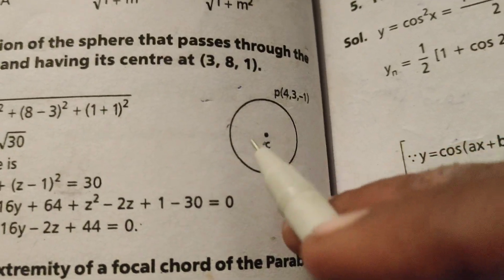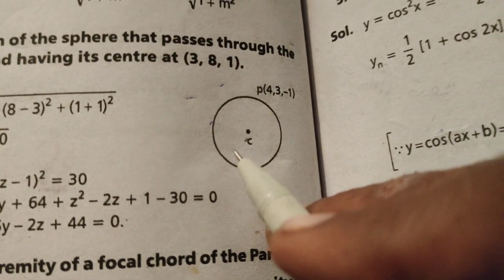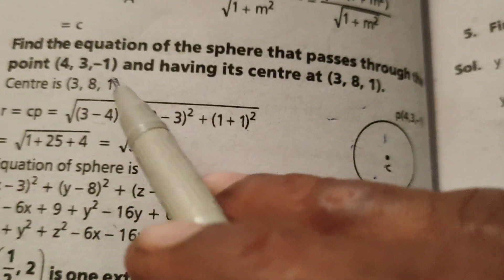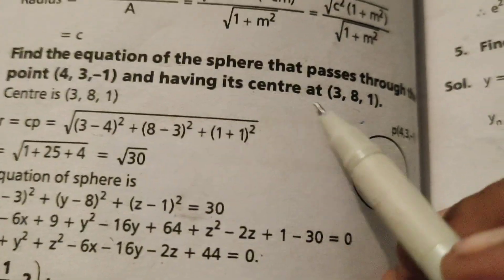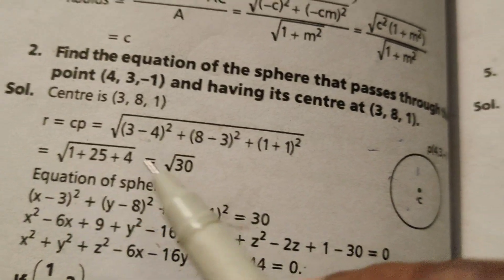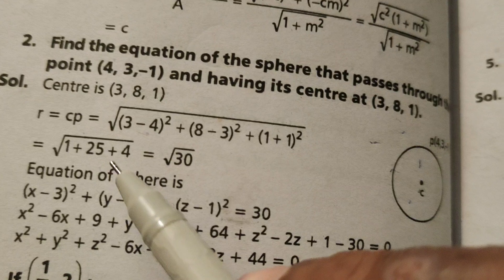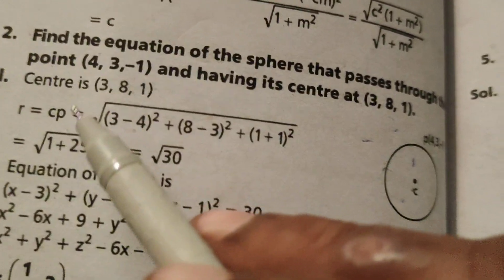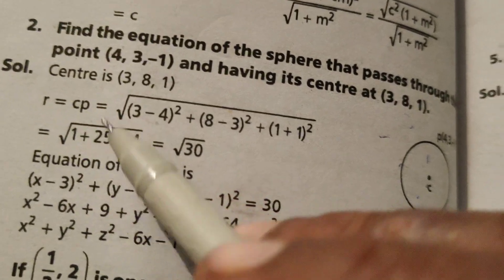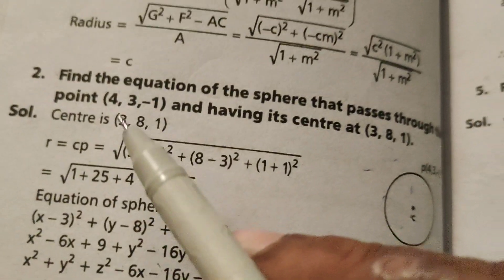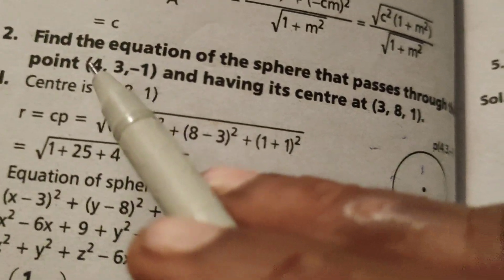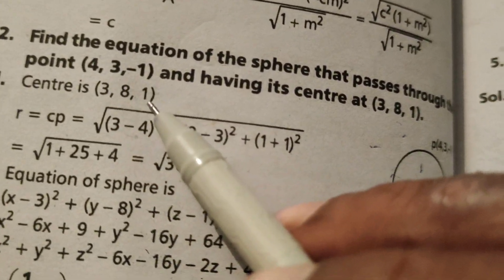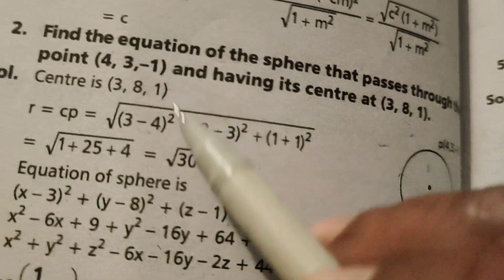Okay, this is the sphere. The point P is (4, 3, -1) and the center is (3, 8, 1). First of all, find the distance between the given point and center. Therefore, R equals CP = √[(x1-x2)² + (y1-y2)² + (z1-z2)²], using the distance formula.